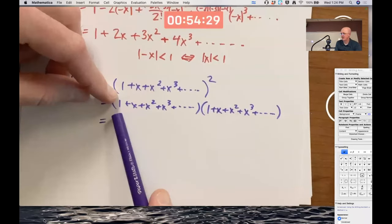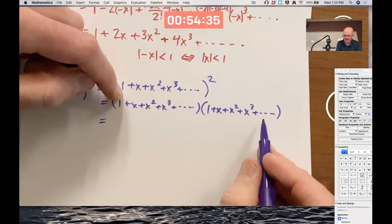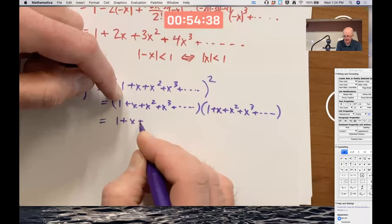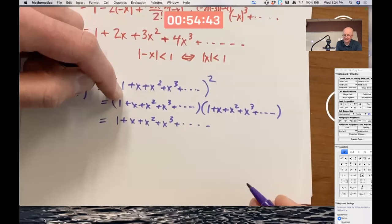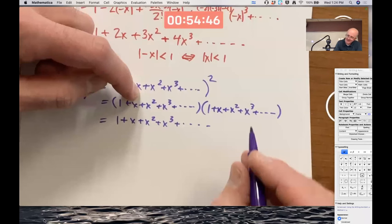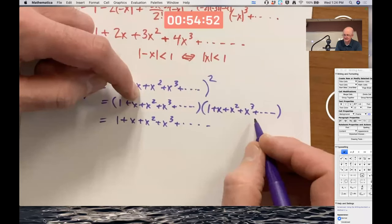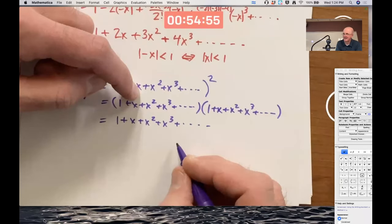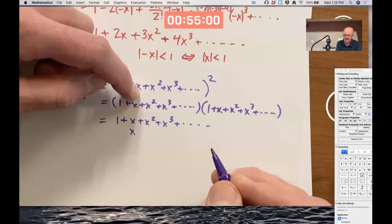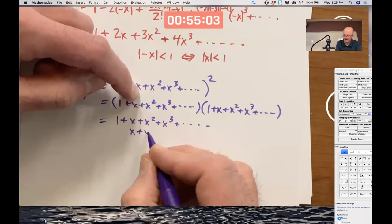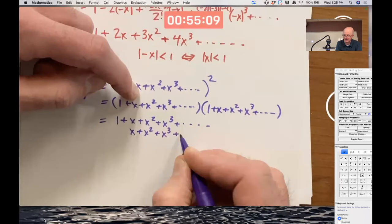Take the first term in the first factor, 1, and multiply it times every term on the right. 1 times everything is that everything. Then go to the second term on the left, x, and multiply it times every term on the right. Increase the power of x by 1 in each case. Put the answer underneath the first answer and line up like terms. x times 1 is x. Put it under the first x. x times x is x squared. Put it under the first x squared. x times x squared is x cubed. Et cetera.